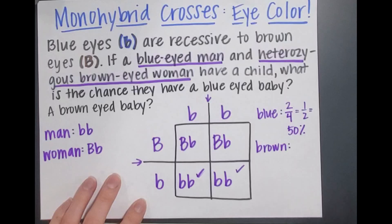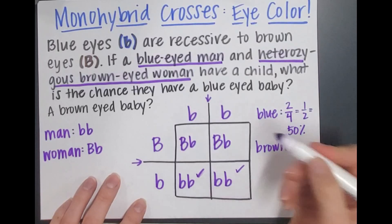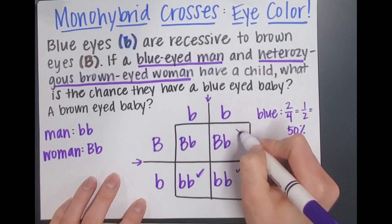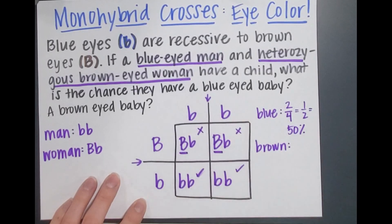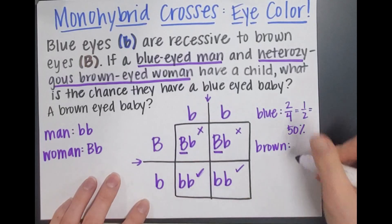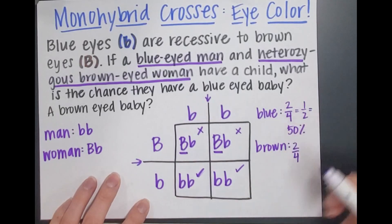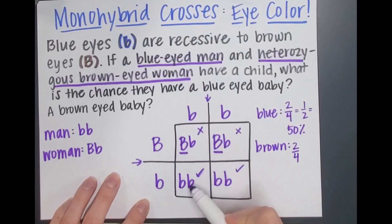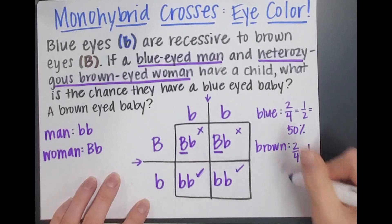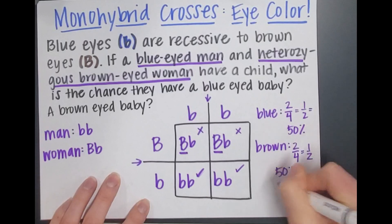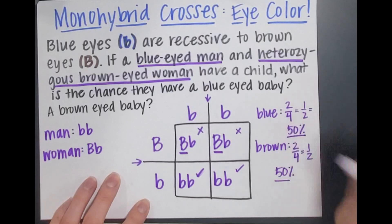Now if we do the same thing for brown eyes — those two are already blue-eyed babies. The remaining two each have at least one dominant allele for brown eyes. So again it's two out of four, which gives us one half or 50% possibility of having brown eyes.